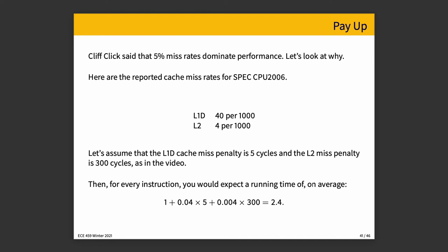For every instruction we expect an average running time of: 1 + (0.04 × 5) + (0.004 × 300) = 2.4 cycles per instruction on average. Misses are very expensive — it would normally take 1 cycle to execute, but on average it actually takes more than double the amount of time.